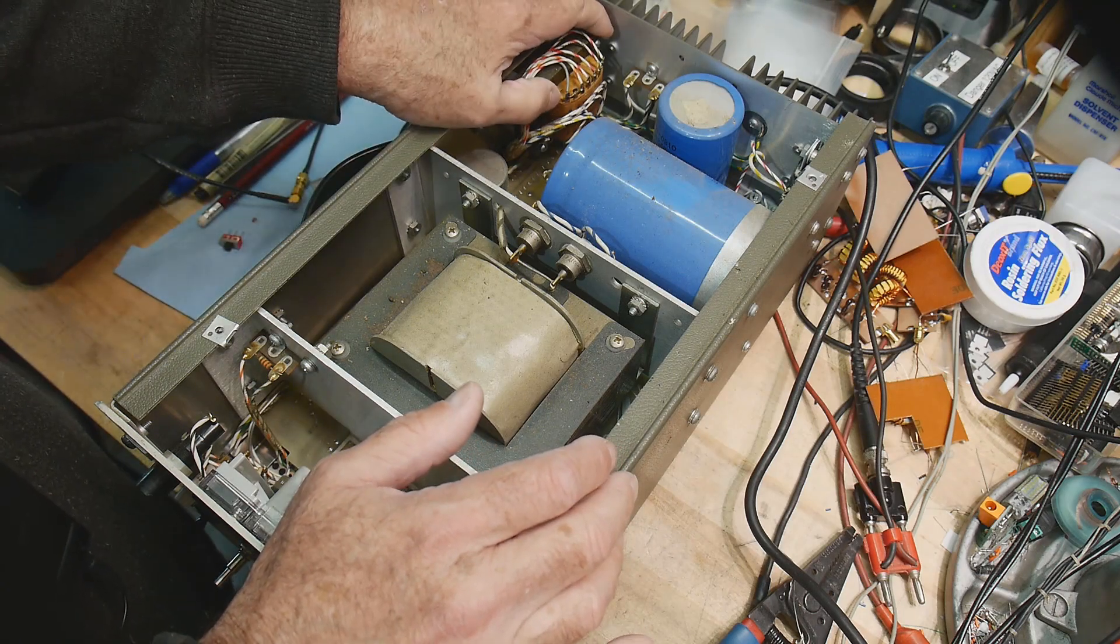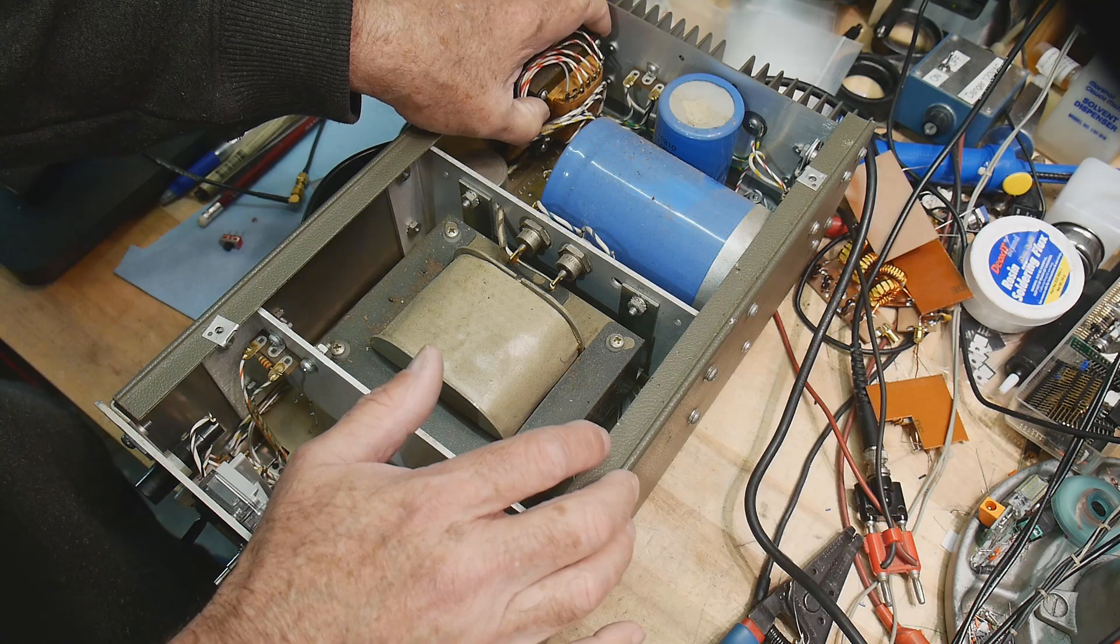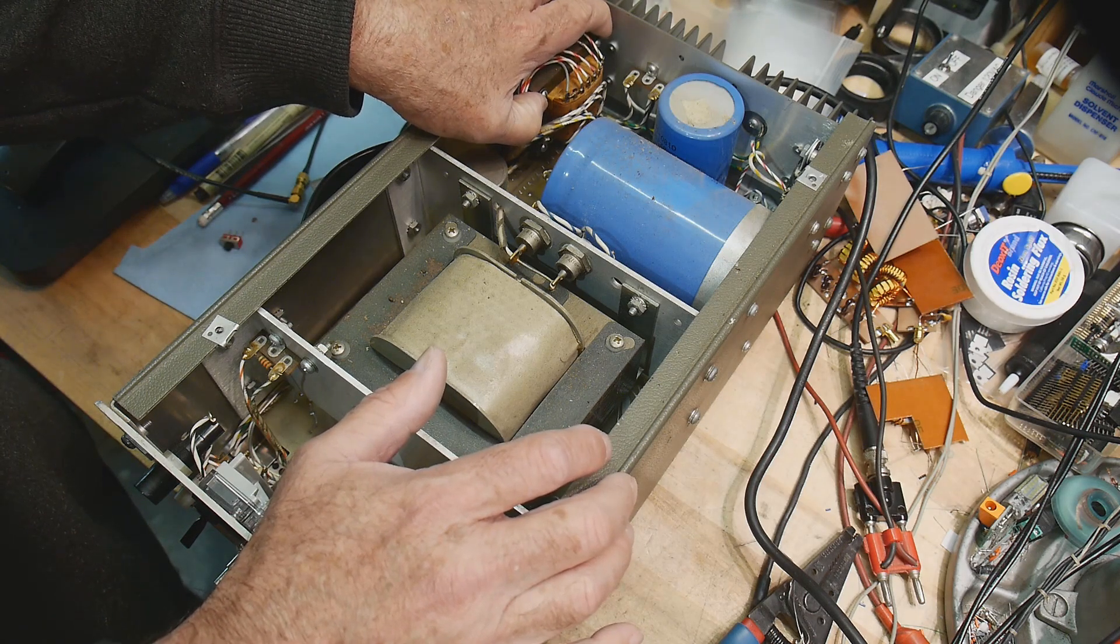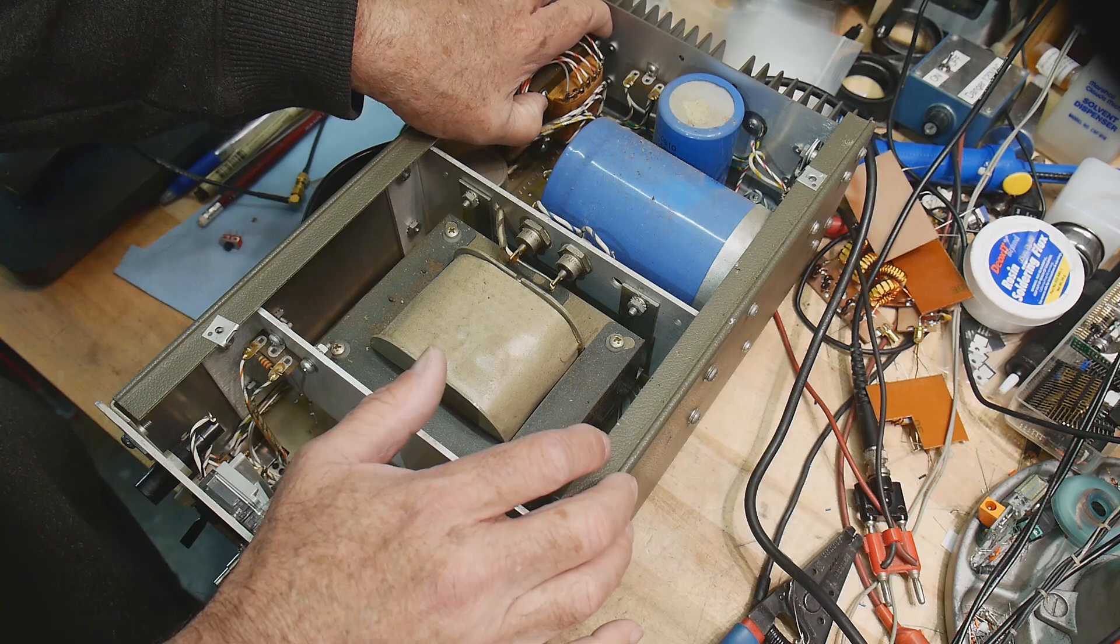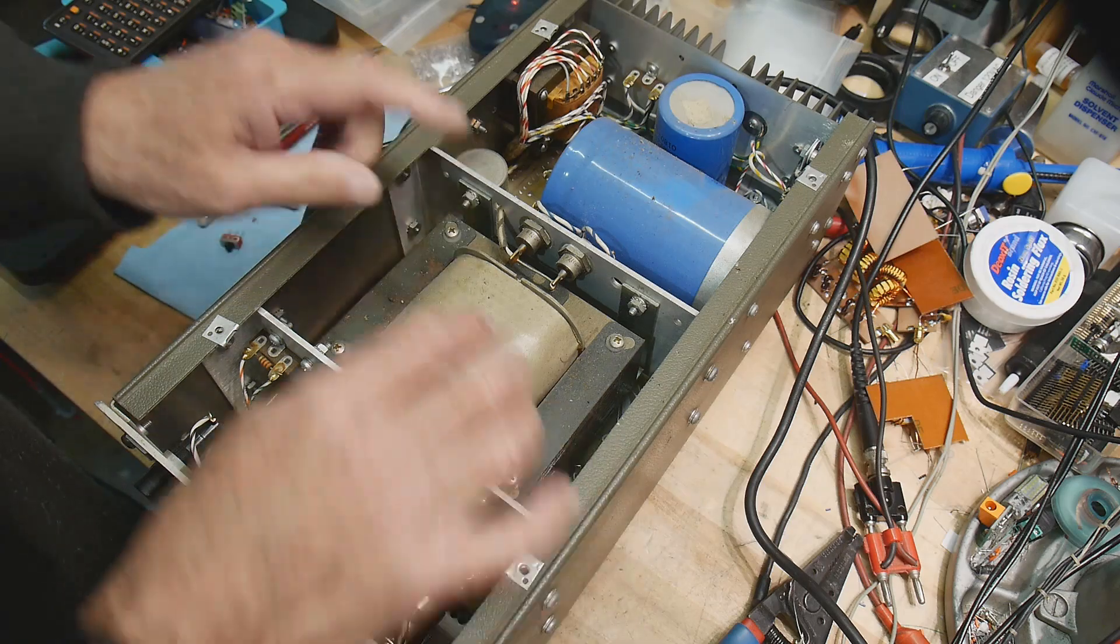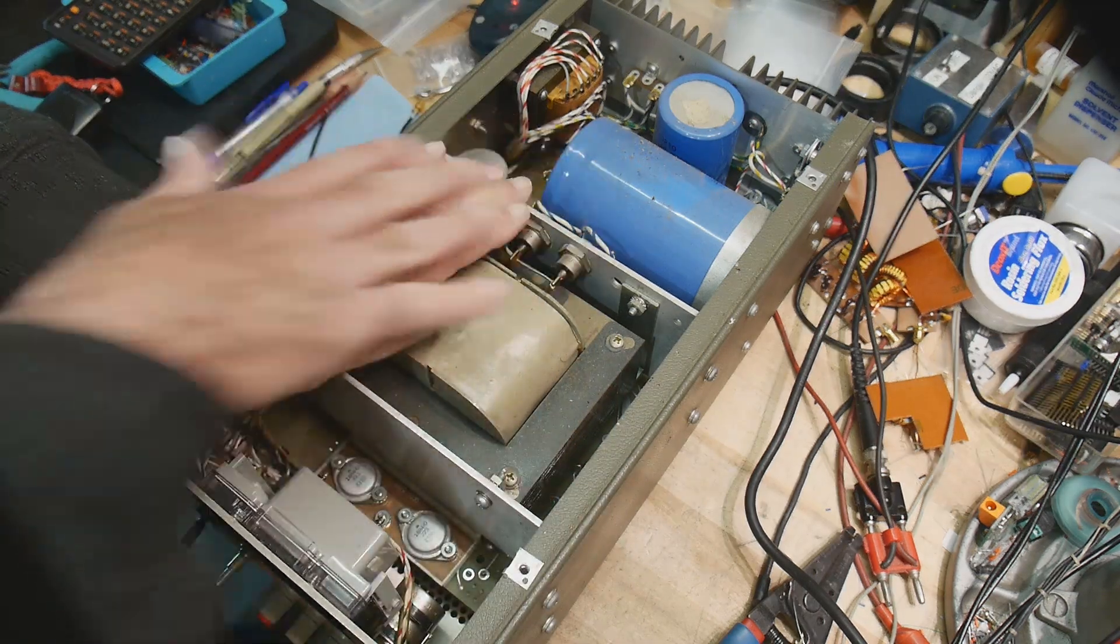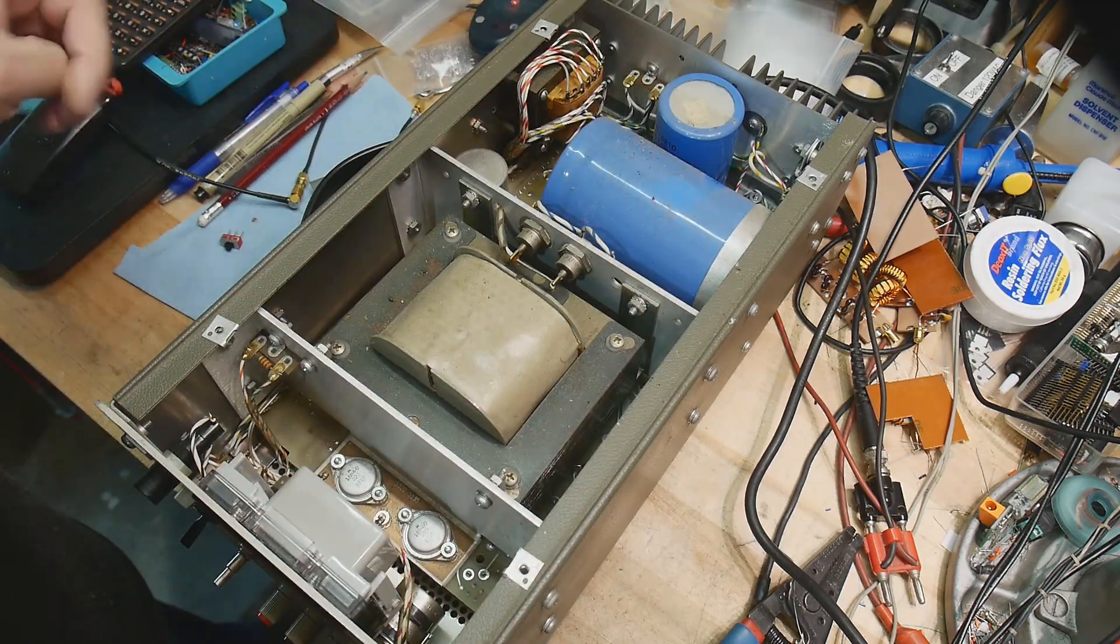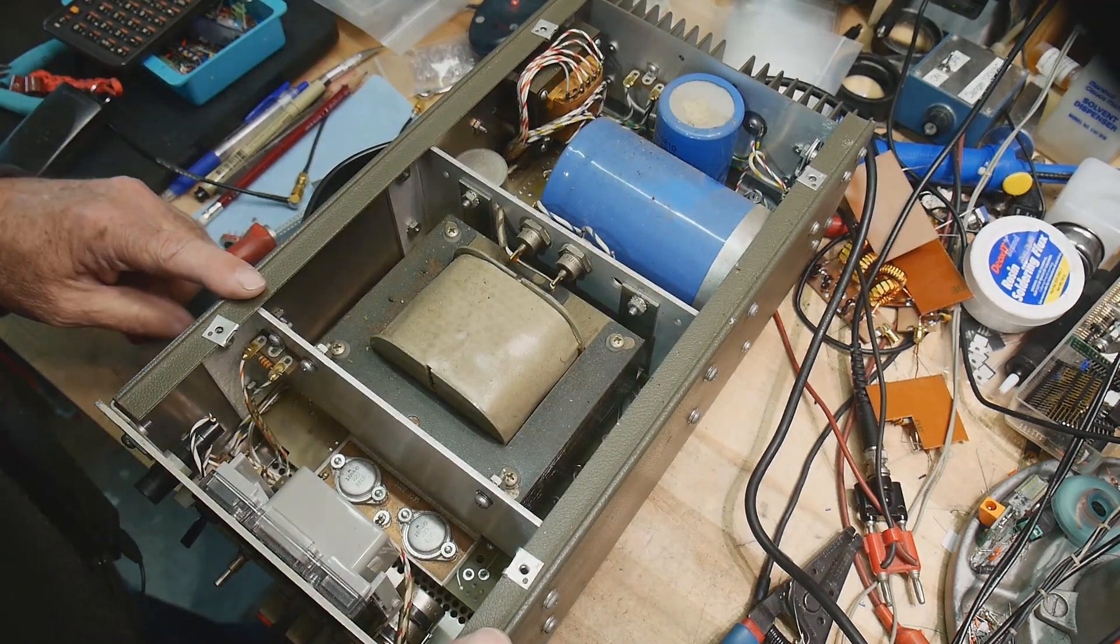This is a power supply inside the power supply just to do all the rails. A lot of times they'll do that. They'll have two sets of windings. One set for the actual power supply, and one set that creates all the voltages you need inside the power supply to make it work.